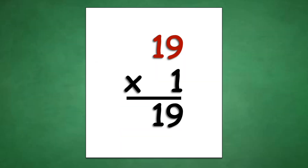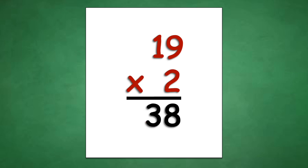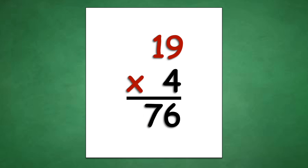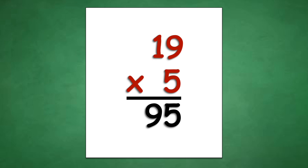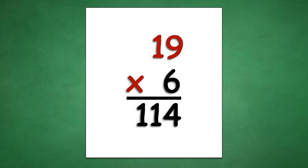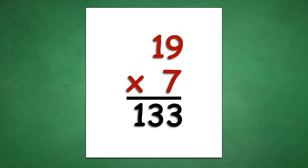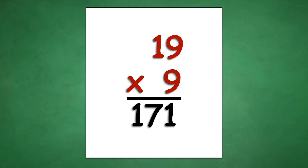Table of 19: 19 times 1 equals 19, 19 times 5 equals 95, 19 times 6 equals 114, 19 times 7 equals 133, 19 times 8 equals 152, 19 times 9 equals 171.